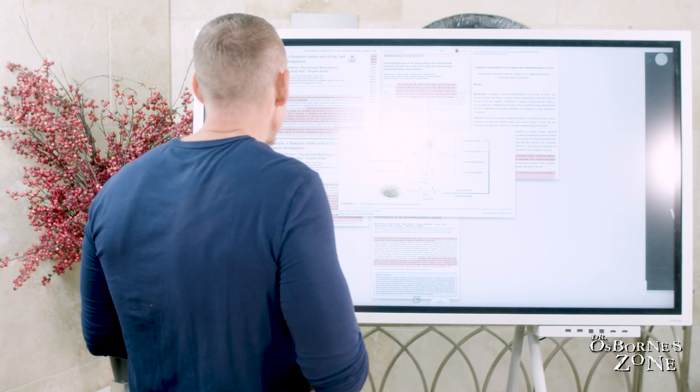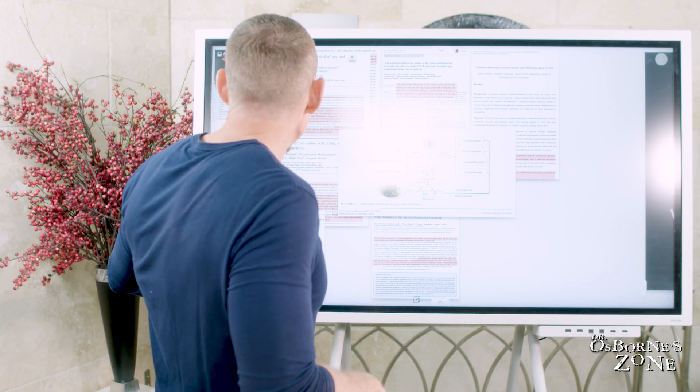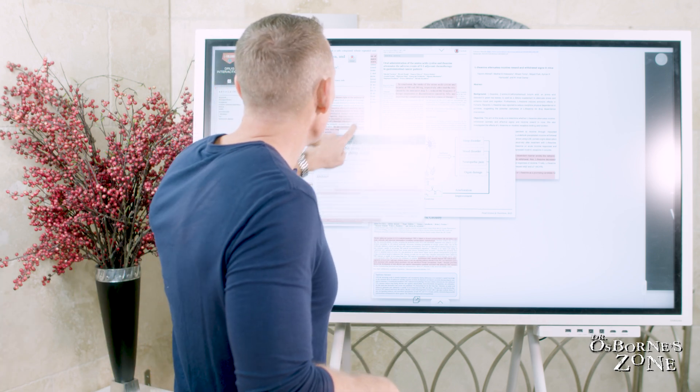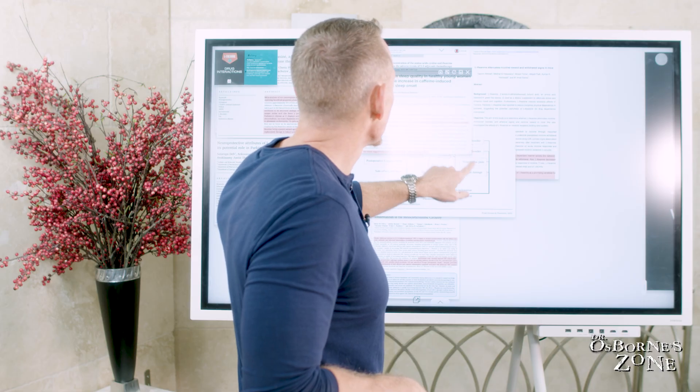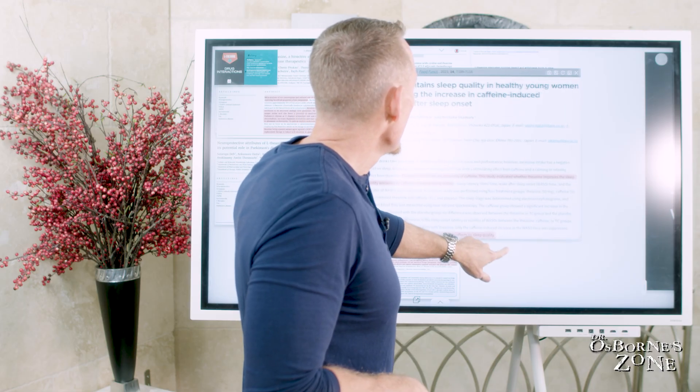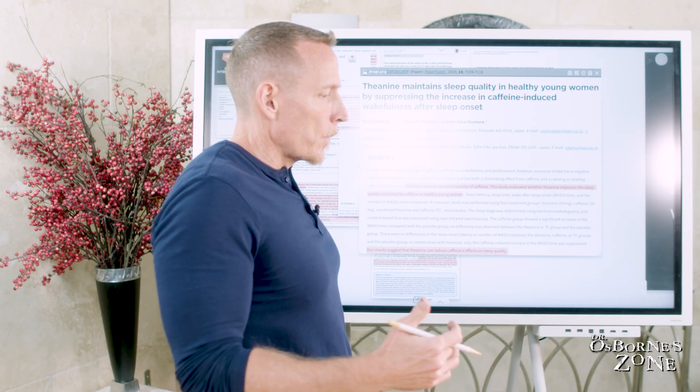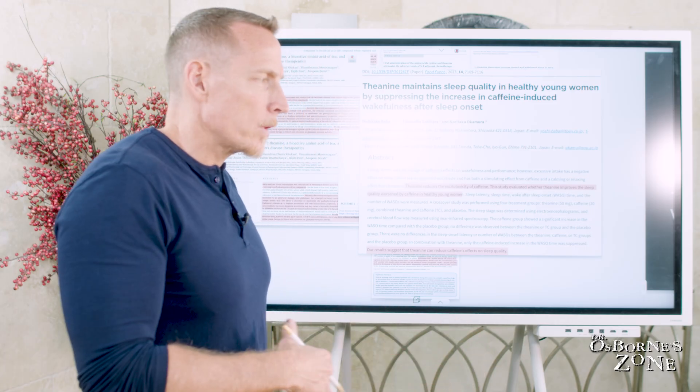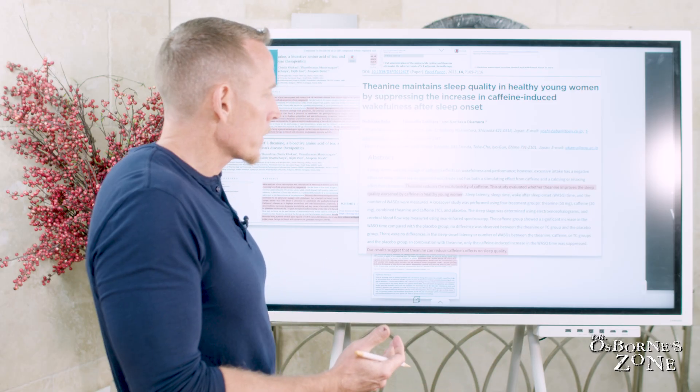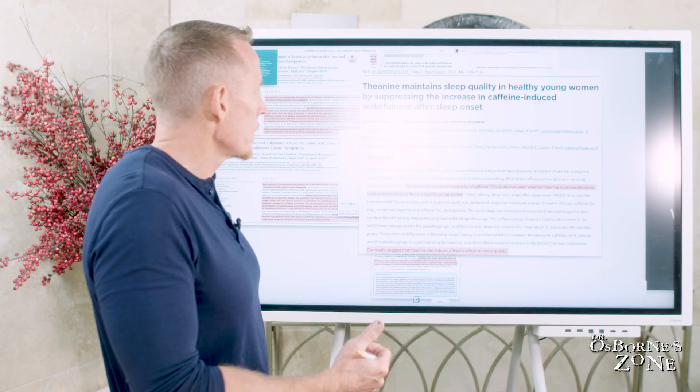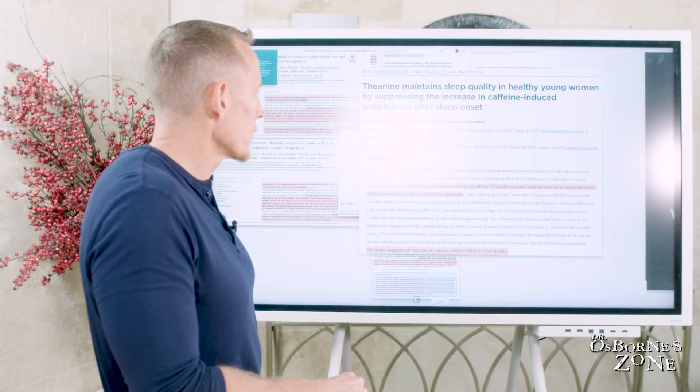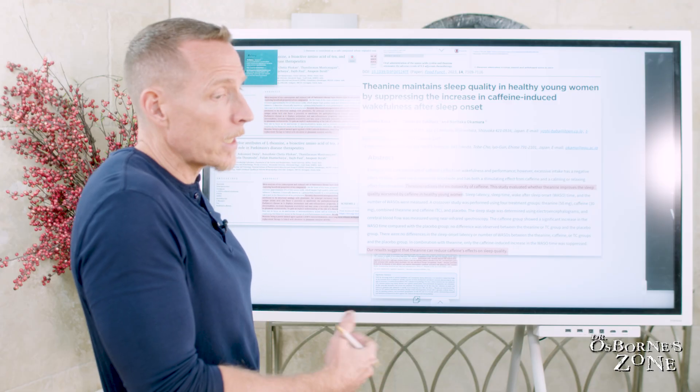Now I want to talk about some of the other mechanisms and drug interactions that we see. One of the things that happens to a lot of people is they overconsume caffeine. We see this a lot, especially in the youth today where they're going to Starbucks and they're getting triple shots. They're jamming out on 500 milligrams of caffeine first thing in the day, and then they can't sleep at night.